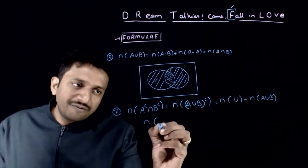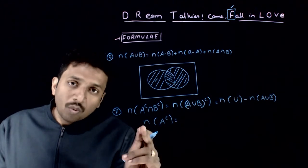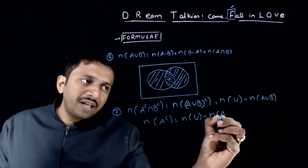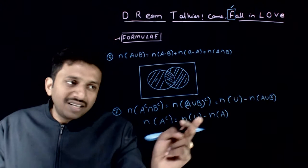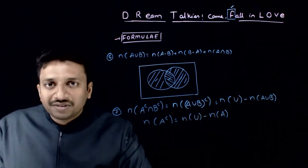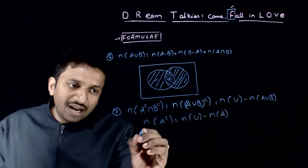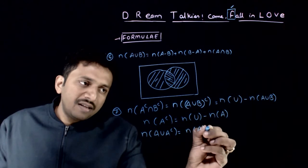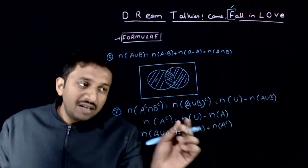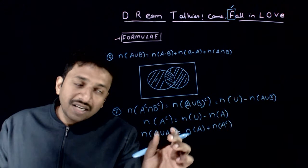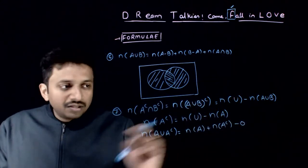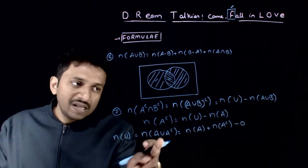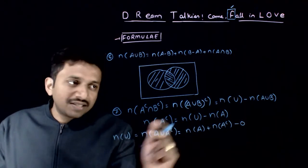To understand this, you need to understand a basic formula: N of A complement equals N of U minus N of A. This comes from the fact that the universal set is the union of A and A complement, so N of A union A complement equals N of A plus N of A complement minus N of A intersection A complement, which is 0. Therefore, N of A complement equals N of U minus N of A.